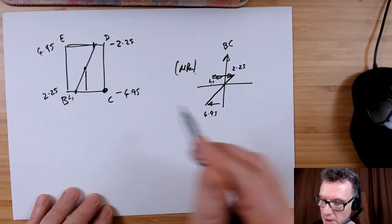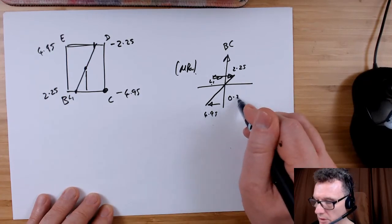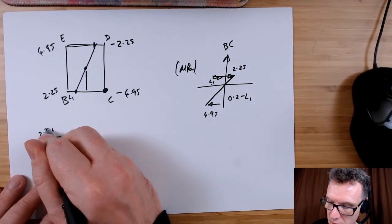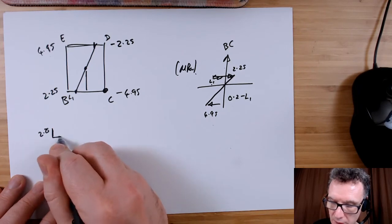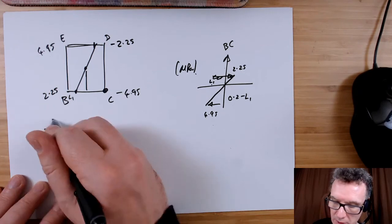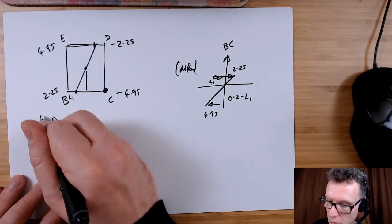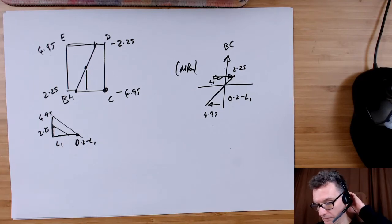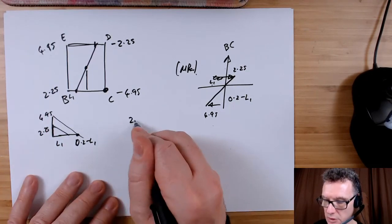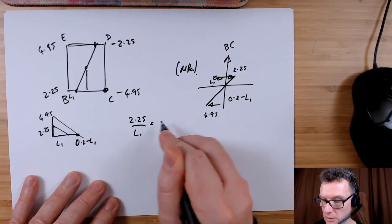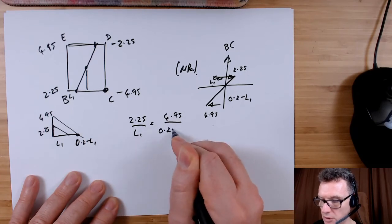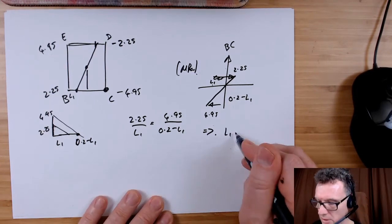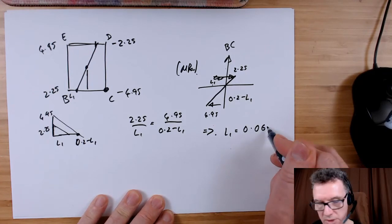The distance from here to here is going to be the total distance, which is 0.2, take away L1. Notice you've got similar triangles. We've got a 2.25 and an L1, that's one triangle. Then we've got a similar triangle of 4.95 with a distance of 0.2 take away L1. Similar triangles, ratios of lengths. So 2.25 divided by L1 equals 4.95 divided by 0.2 take away L1. Now you can do the math and you'll find that L1 equals 0.0625 meters.